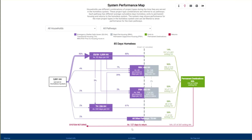The system map shows the combinations of project types that households use as they move through the homeless system — referred to as pathways. Each line is part of one or more pathway, and the percentages and thickness of the lines show the portion of households using each project type. In this COC, 90% of all households used emergency shelter or safe haven — 3,509 households with an average of 53 days in shelter. Of those, 85% did not use any other project type, which we call the shelter-only pathway. 7% used shelter in combination with rapid rehousing, 3% with permanent supportive housing, and 5% with transitional housing.